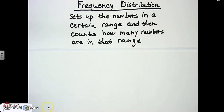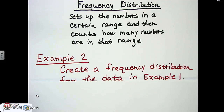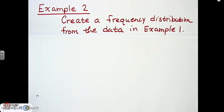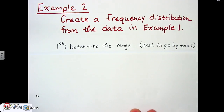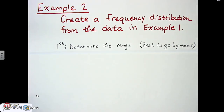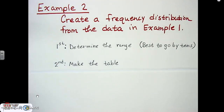Let's take a look at Example 2. We're going to create a frequency distribution from the data in Example 1. We already wrote the information for Example 1, so we're going to take that stem-and-leaf plot and make a frequency distribution from it. Step one: determine the range, and it's best to go by tens because that makes it easier. You don't always have to, but it's recommended.